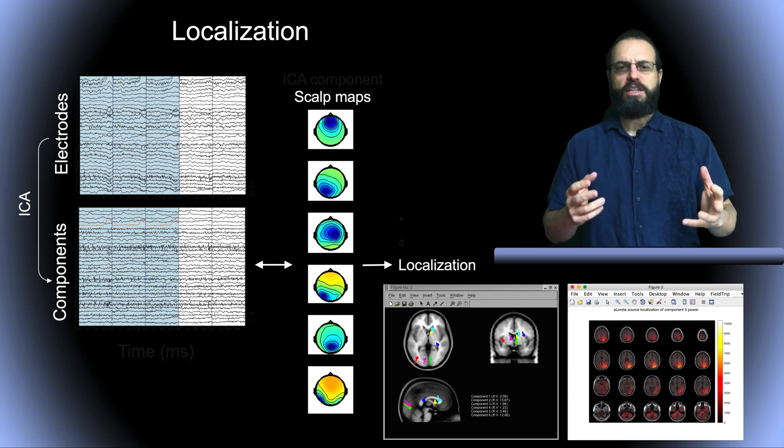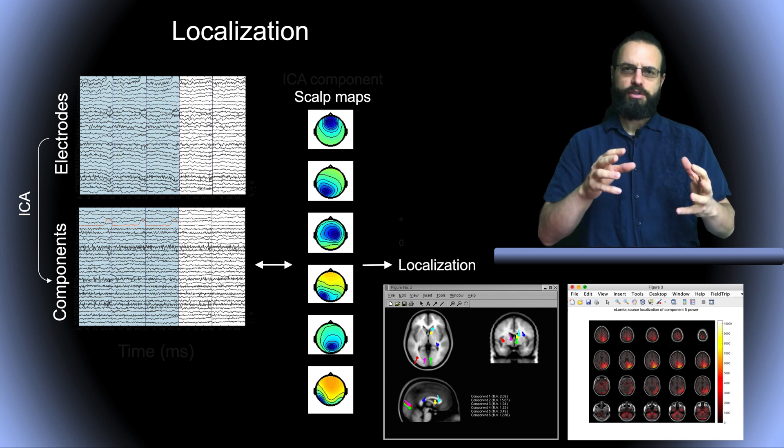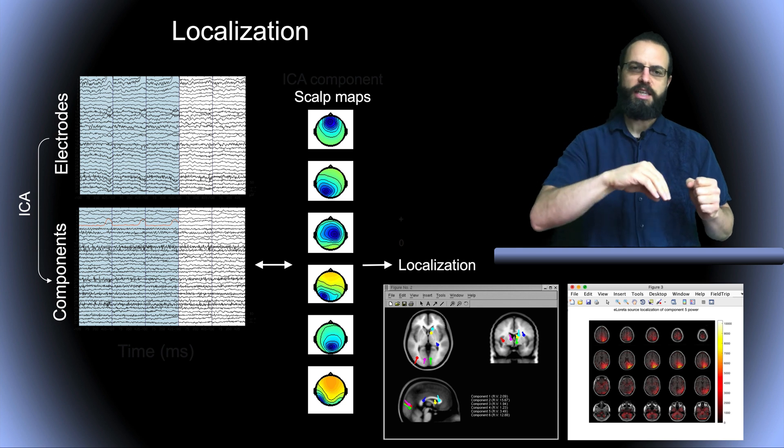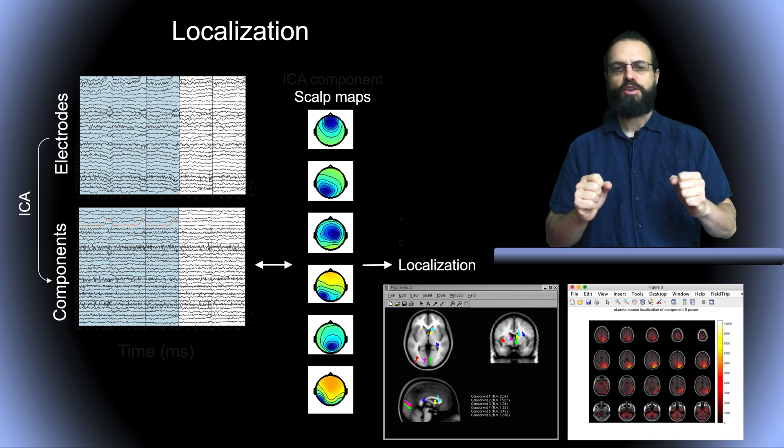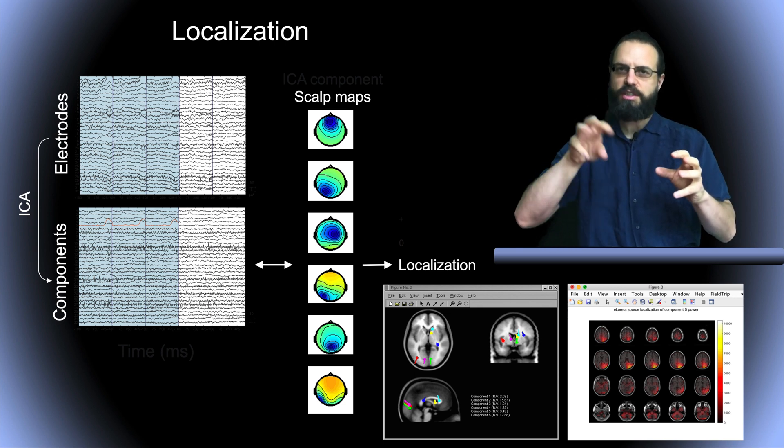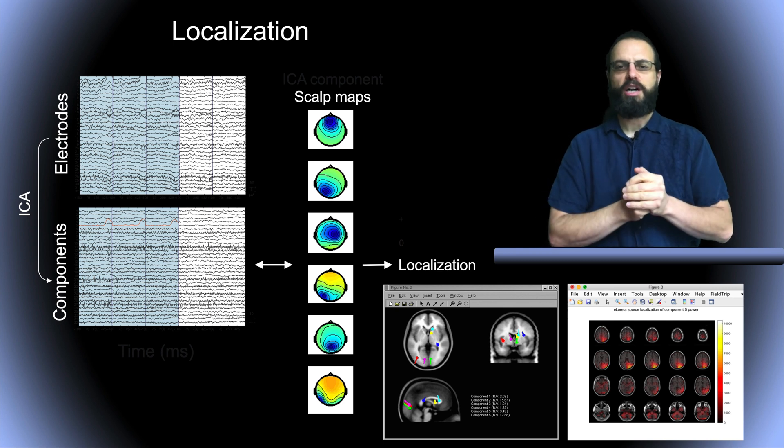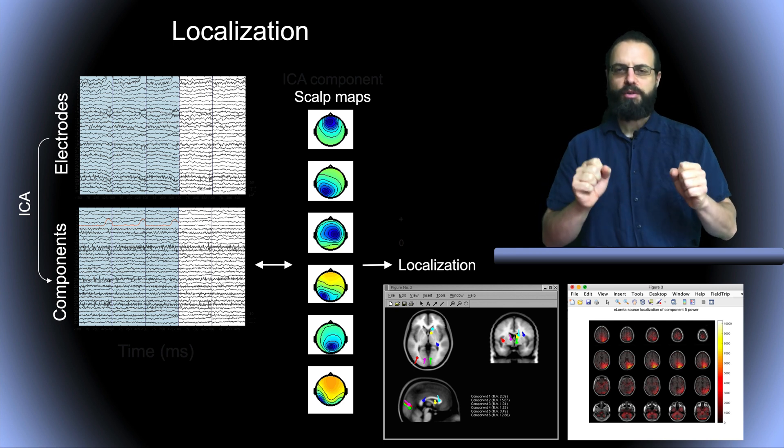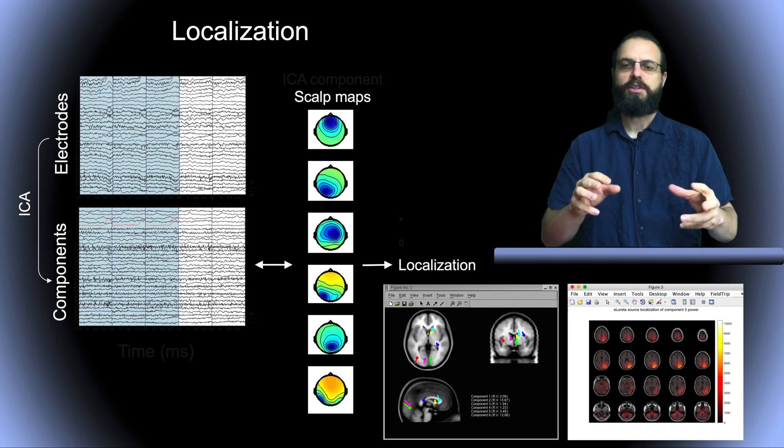So what is ICA localization of components? We have our electrodes, and then we use ICA, we get our components, and components we get both time series and scalp topography, as we've talked before. With the scalp topography, we can then do source localization.